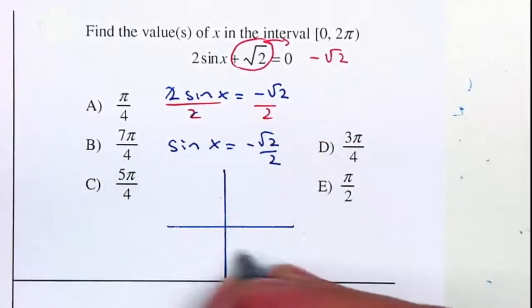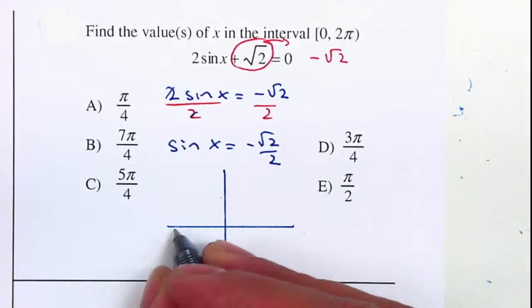Sine is negative, so sine is negative on the third and fourth quadrant. Sine is your y value.